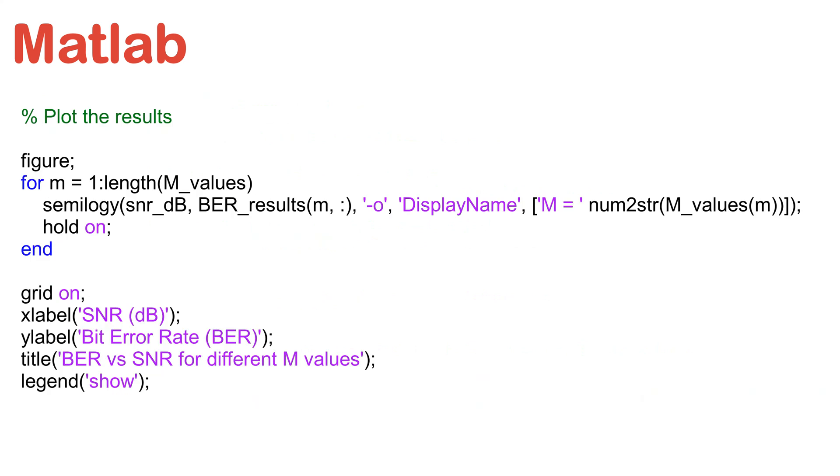Once the parameters are updated, the simulation runs and the output is captured. The BER is calculated at each iteration, and we plot the results.